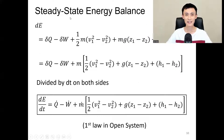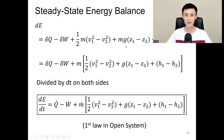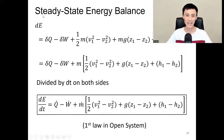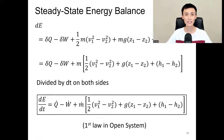For steady state, mass in equals mass out, so our formula takes that form. Since we have mass on each term, we can factor mass out. Then if we divide both sides by time, this is our first law in the open system. Steady state means time won't matter, so the energy balance is independent with time, meaning dE/dt equals zero.